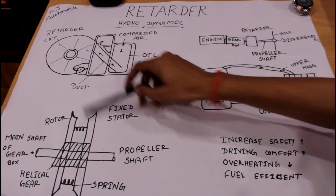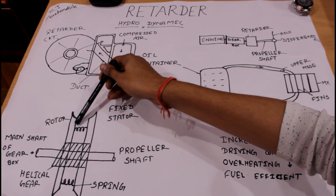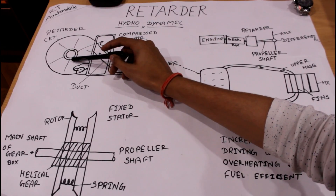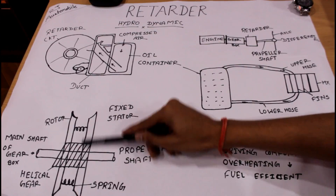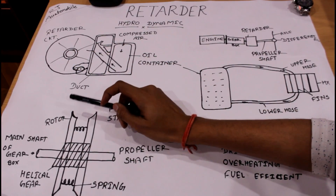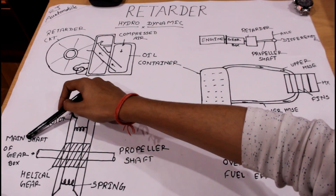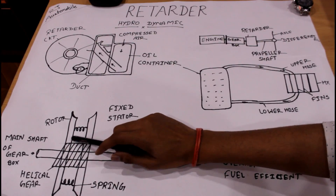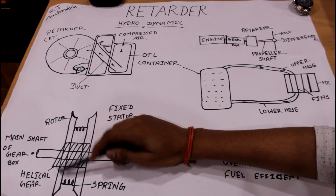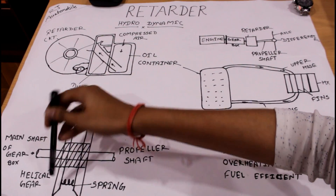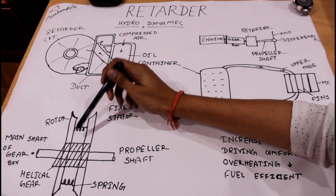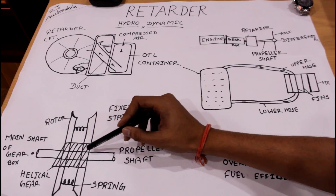Inside the retarder circuit there is a rotor and a fixed stator. When the oil enters the retarder circuit it fills the chamber. The stator is fixed and the rotor is in a moving condition because the rotor is connected with the main shaft of the gearbox as well as the propeller shaft. When the oil fills the chamber, due to its high viscosity it retards the rotation of the rotor, and because of the helical gear the rotor moves towards the fixed stator, slowing down the speed of the vehicle.